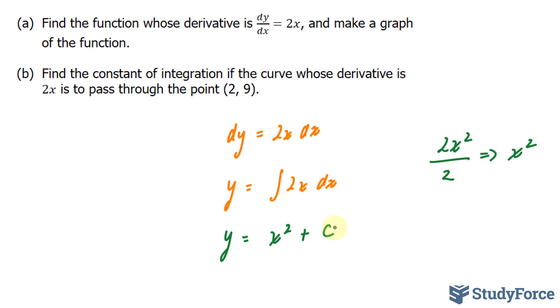In the same question, they ask us to make a graph of the function. Now, the only thing that you can do here is graph x to the power of 2 and put random values of C to see how that affects the parabola, because x to the power of 2 is a quadratic, and it produces a parabola.